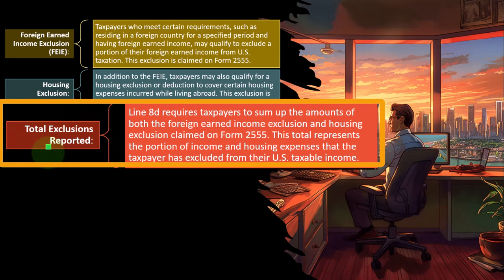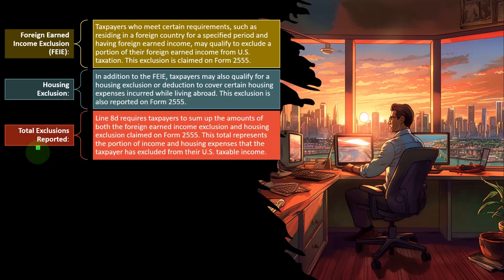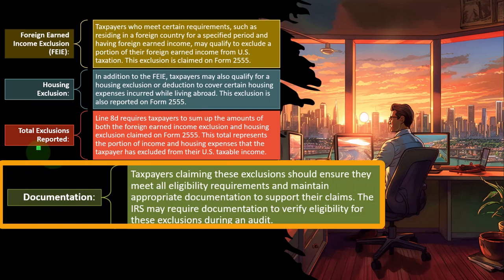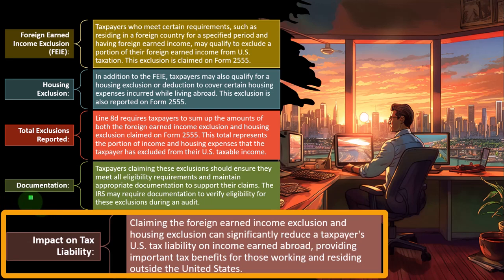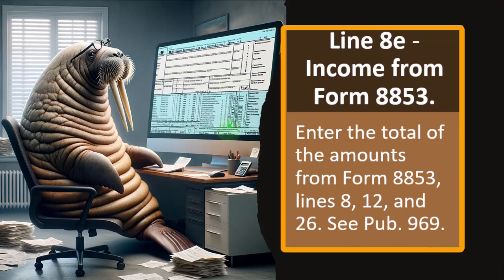Line 8D requires taxpayers to sum up the amounts of both the foreign earned income exclusion and housing exclusion claimed on Form 2555. This total represents the portion of income and housing expenses excluded from U.S. taxable income. Taxpayers claiming these exclusions should ensure they meet all eligibility requirements and maintain appropriate documentation, as the IRS may require it during an audit. Claiming these exclusions can significantly reduce the taxpayer's U.S. tax liability on income earned abroad.